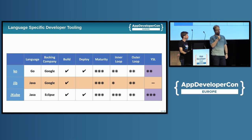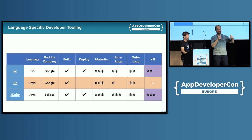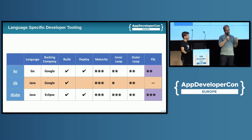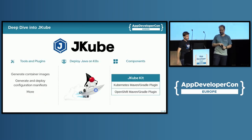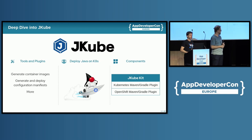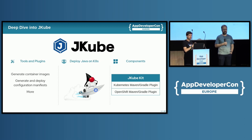And then finally we have JKube. Who has heard about JKube already? Nobody? One? Okay, great — because the rest of the talk will be about JKube. Our approach is a quick overview of everything, and now we dive deep into a single one. JKube is a very nice way to integrate into your existing Maven and Gradle builds without learning any new tooling. JKube is a set of tools and plugins that will actually help you generate container images and generate and deploy the cluster configuration manifests for your Java application.